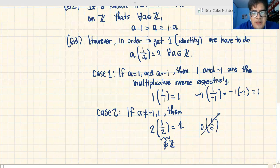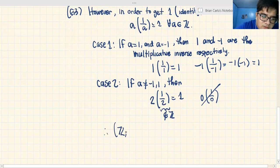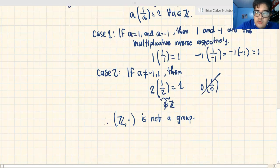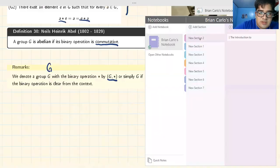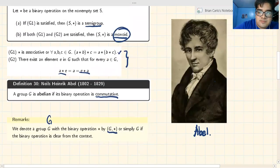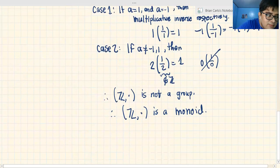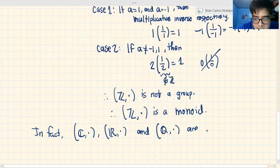So therefore, not every element on Z, when you apply multiplication, has a multiplicative inverse. So what does that mean? Z with multiplication is not a group. Is not a group. However, you followed G1 and G2. That means Z is a... what is it? Let's check again. If G1 and G2, you are a monoid. Therefore, it is a monoid.